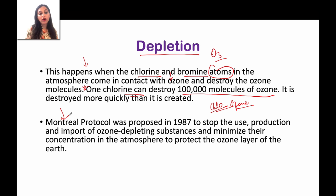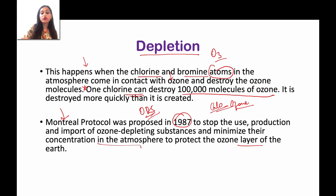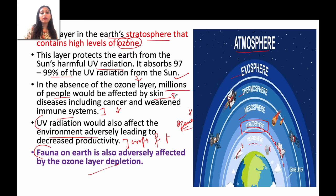For the Montreal Protocol, in 1987 it was proposed that chlorofluorocarbons and other ozone-depleting substances be stopped and their production minimized, so that their concentration will reduce. There is also one important concept: good ozone and bad ozone.